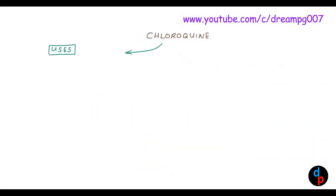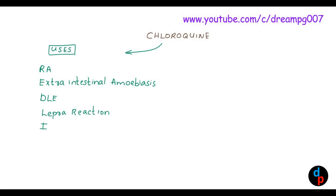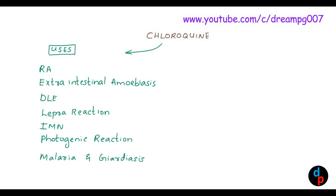This drug is used in many conditions. It includes rheumatoid arthritis, extra-intestinal amoebiasis, discoid lupus erythematosus, lepra reaction, infectious mononucleosis, photosensitivity reaction, malaria, and giardiasis. It can be easily remembered by the mnemonic RED LIP MG.